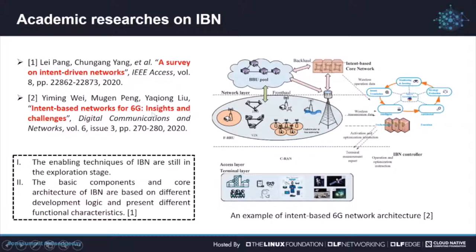The second paper is from Mugen Peng's team — Intent-based Network for 6G: Insights and Challenges. It gives an overview of the intent-based 6G network architecture. It shows the future network of the 6G network, which is based on the intent-based network to support the smart network.